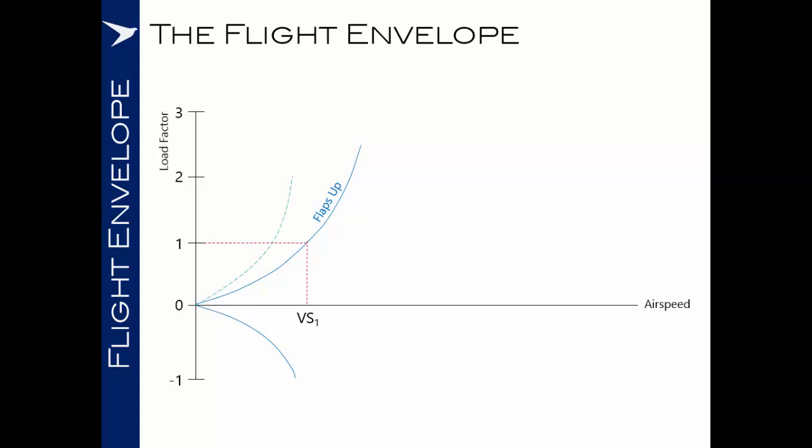When we have the flaps deployed or other high lift devices, we'll be able to generate a greater amount of lift at lower airspeed. However, it's often the case that with high lift devices or undercarriage deployed, we have a lower maximum G limit of the aircraft. In the case of the diagram here, we have a maximum permissible load factor of plus two G and down to zero G whilst the flaps are deployed.